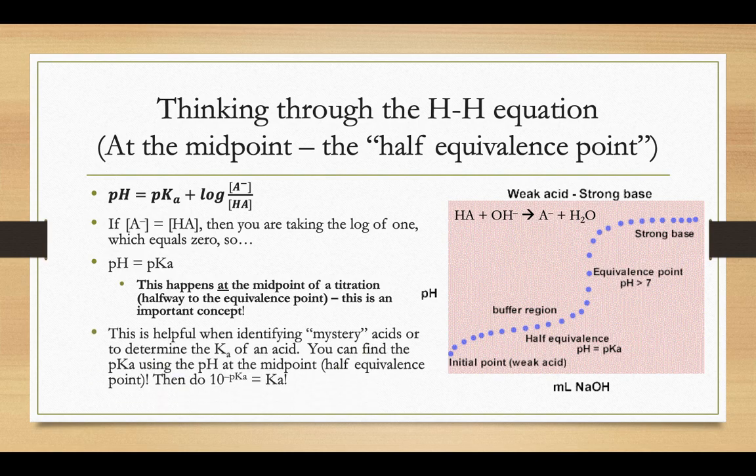One of the interesting things is that you can identify maybe a mystery acid using the Ka value. So if it gave you a graph and a few different Ka values, and it said which acid are we using to titrate, what you could do is find the pKa values of all of those acids. Look at the pH at the midpoint, the half equivalence point, and then do 10 to the negative pKa. Since your pKa matches your pH at that midpoint, then you'll know the Ka value of your mystery acid, and you can identify which one it might be.